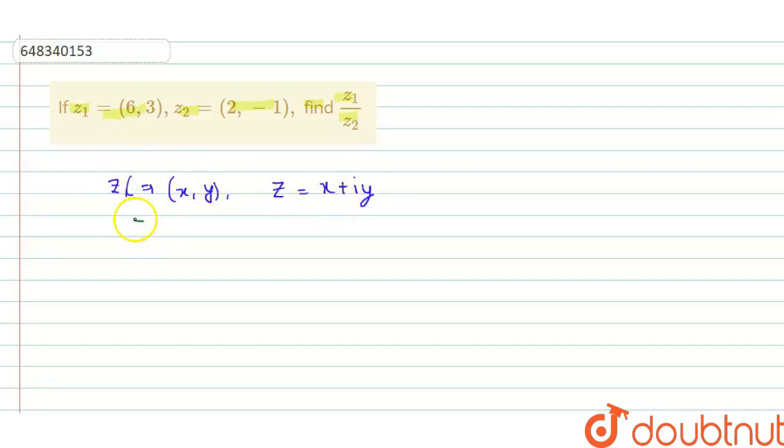So similarly applying this concept, z1 comes out to be 6 plus 3 iota and z2 is 2 minus iota. Now z1 by z2, we have to calculate z1 by z2, so it will be